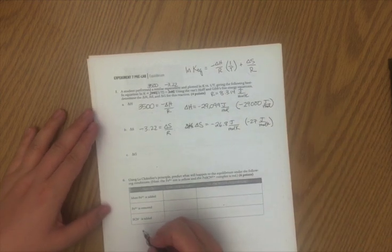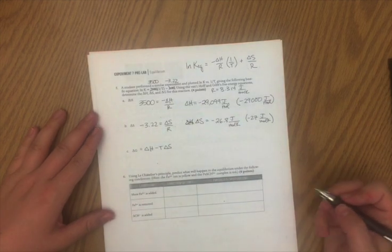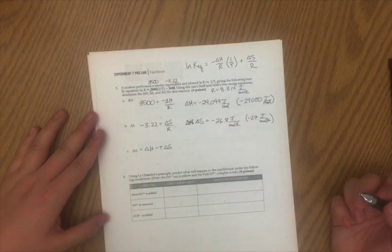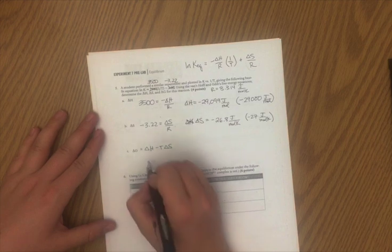To find the ΔG, we say ΔG equals ΔH minus T ΔS. I'm going to do this at 298 Kelvin room temperature. And again, I'm just going to plug in these values that we calculated above.